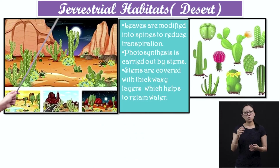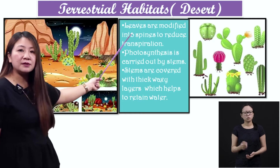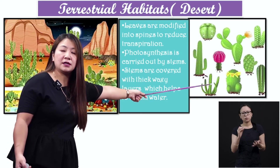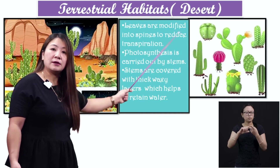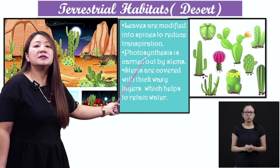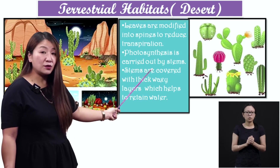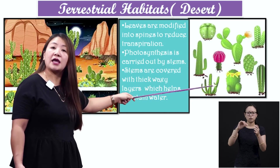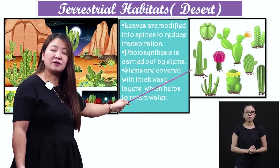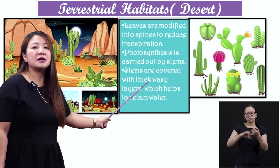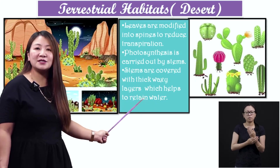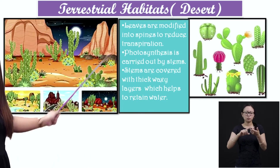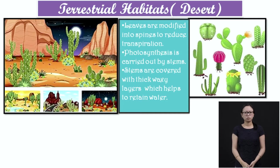So these are the adaptations of desert plants in the dry place. Leaves are modified into spines — you can see the thorns on the cactus — to reduce transpiration. Photosynthesis is carried out by the stems, not the leaves. The green-colored stems make food for the plant. The stems are also covered with thick, waxy layers which help to retain water.